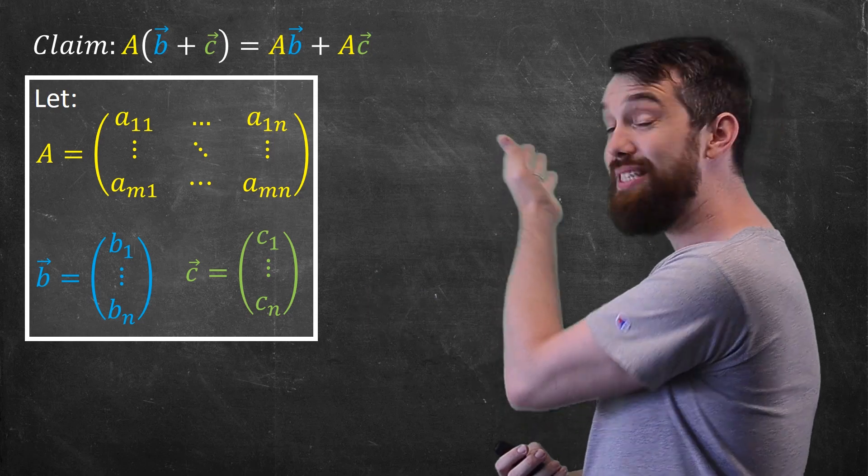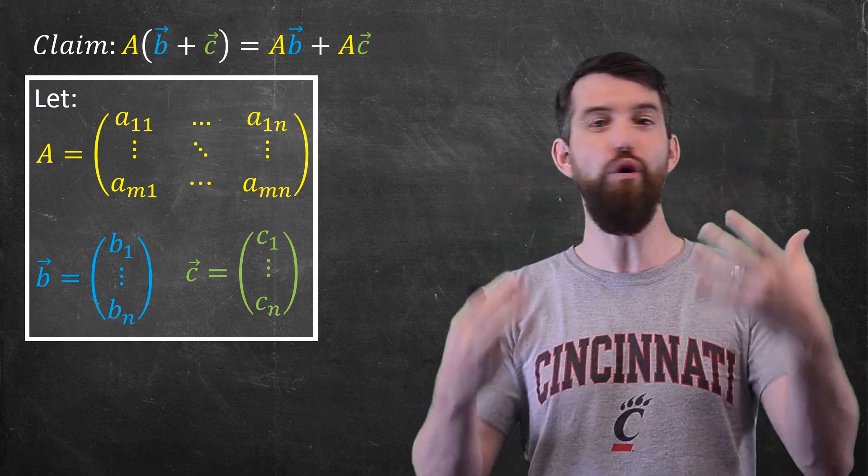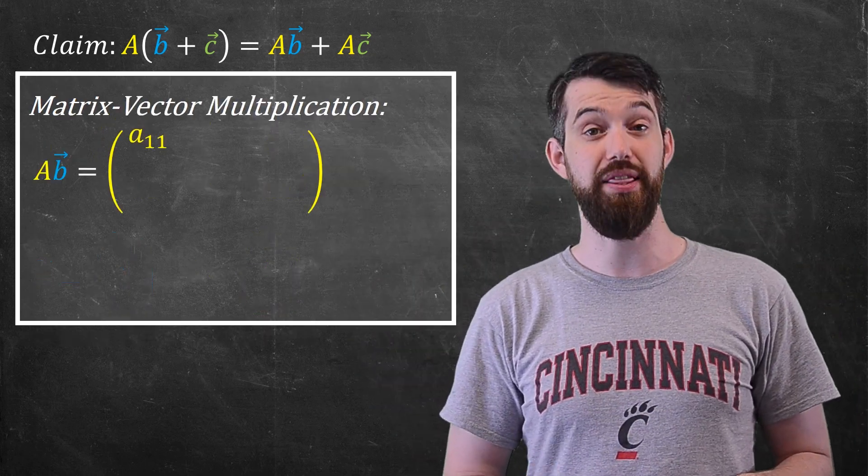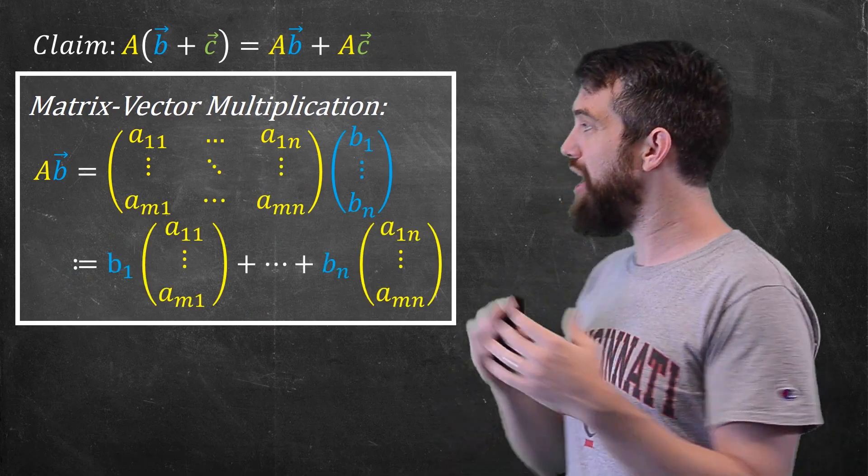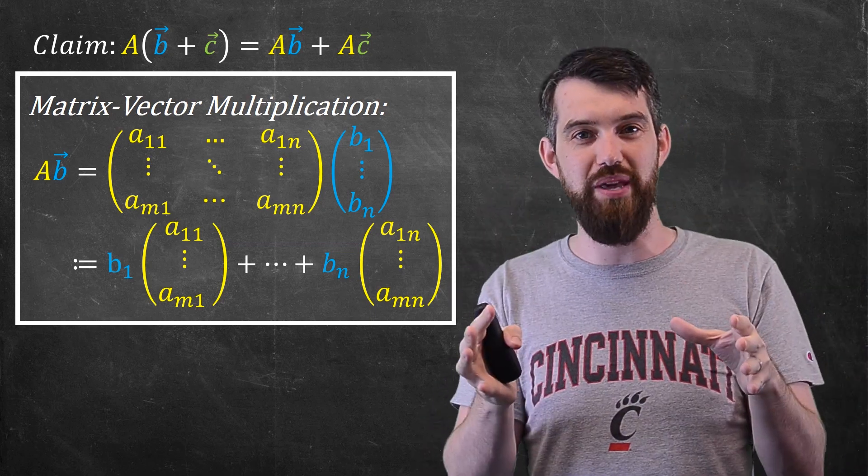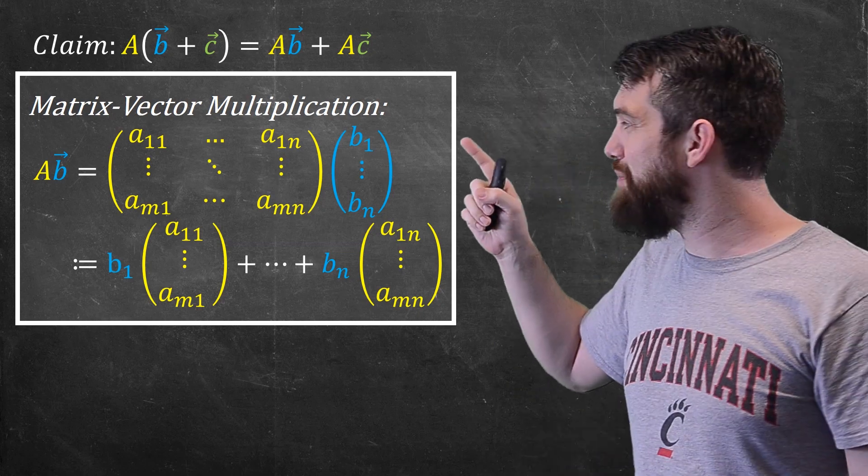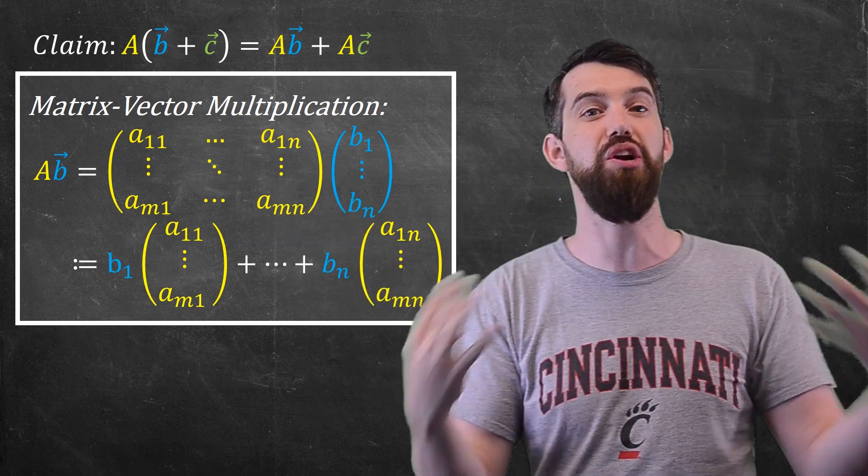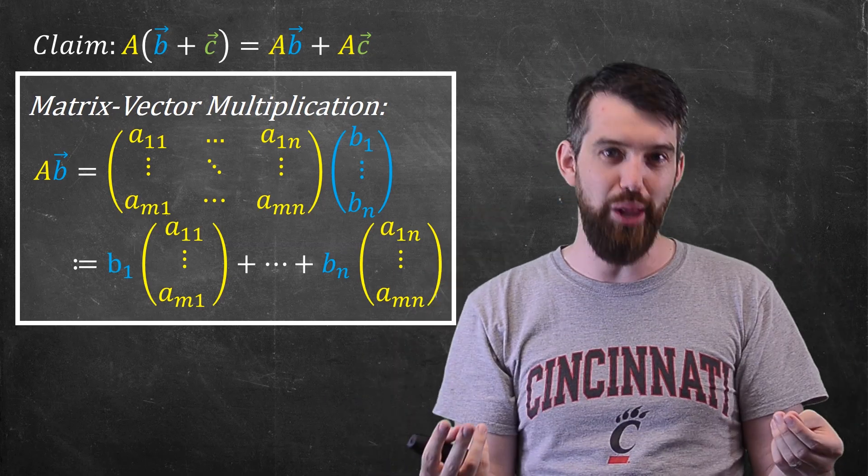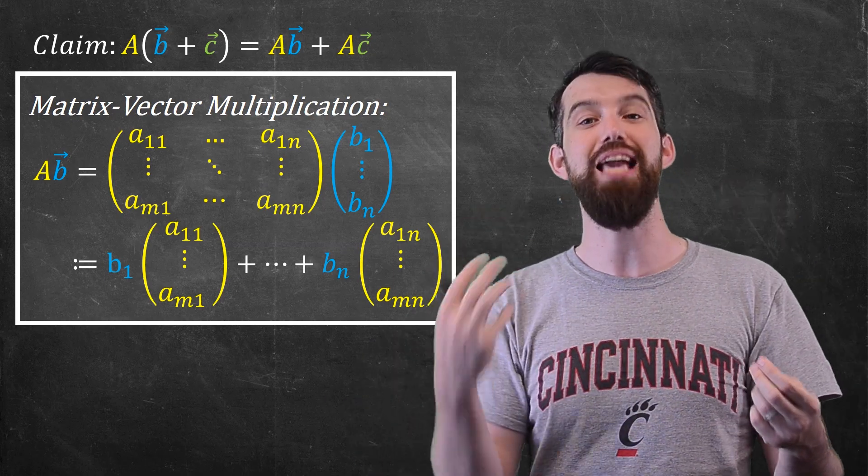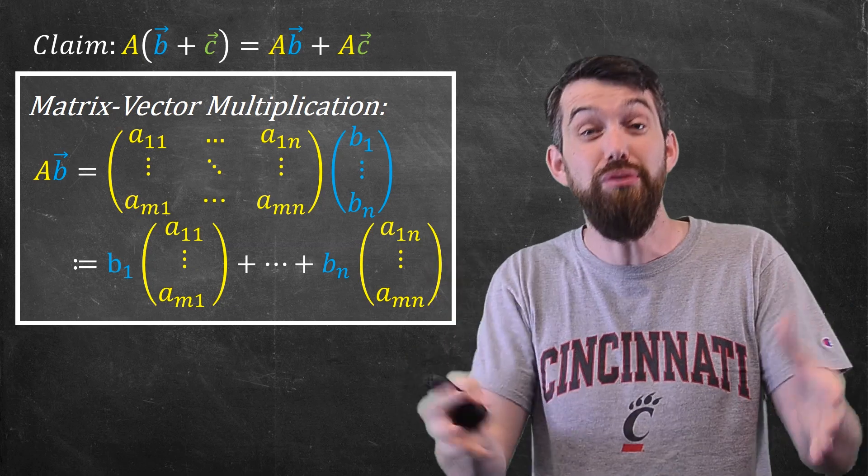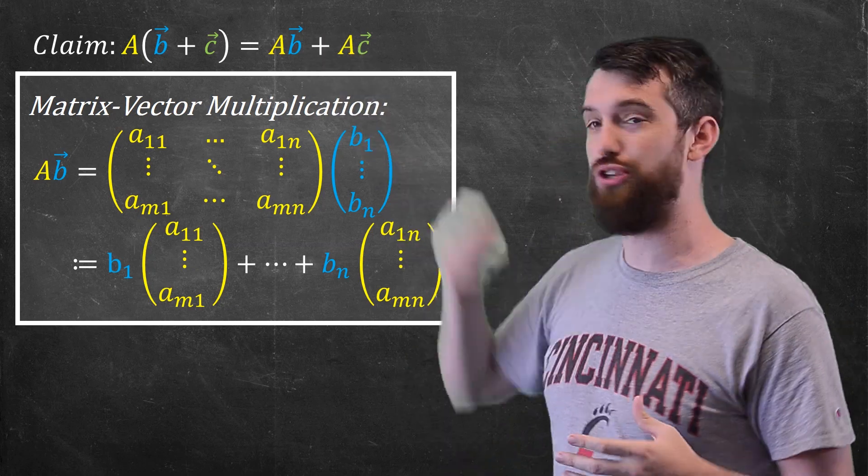Before we jump into the actual proof, I want to remind you how this matrix vector multiplication actually works. If I wanted to take the generic A matrix and multiply it by B, the B vector became the coefficients, the scalar multiples in this linear combination. So it's going to be b_1 times the first column of A plus b_2 times the second column of A all the way down to b_n times the nth column of A. That was just the definition of how this matrix vector product worked, and certainly we're going to have to use that definition when we try to prove this larger distributivity property.